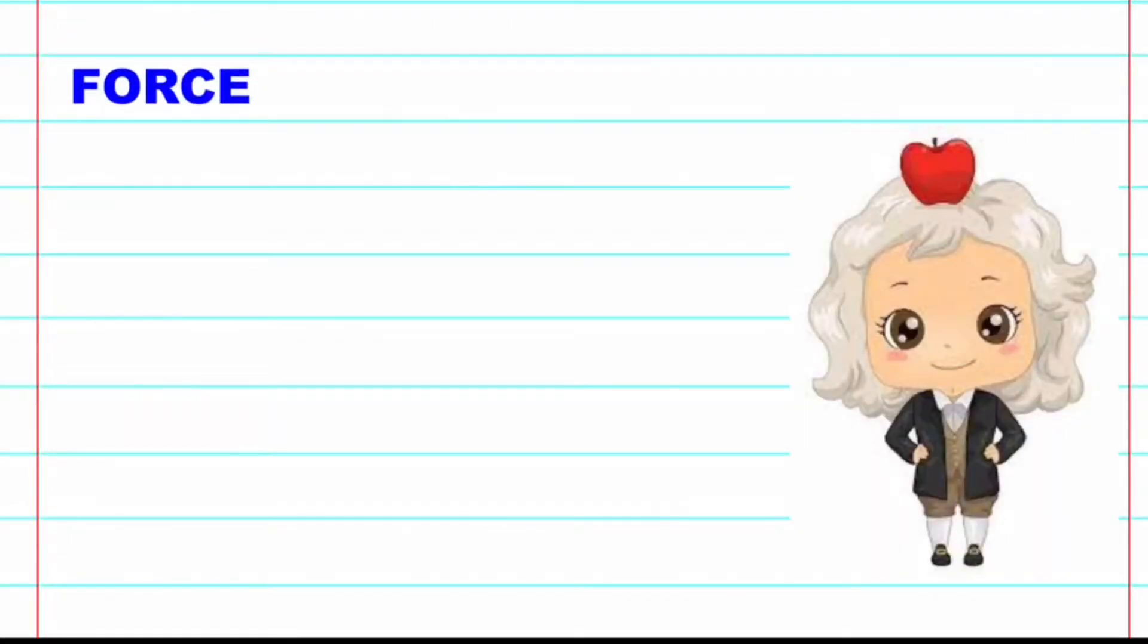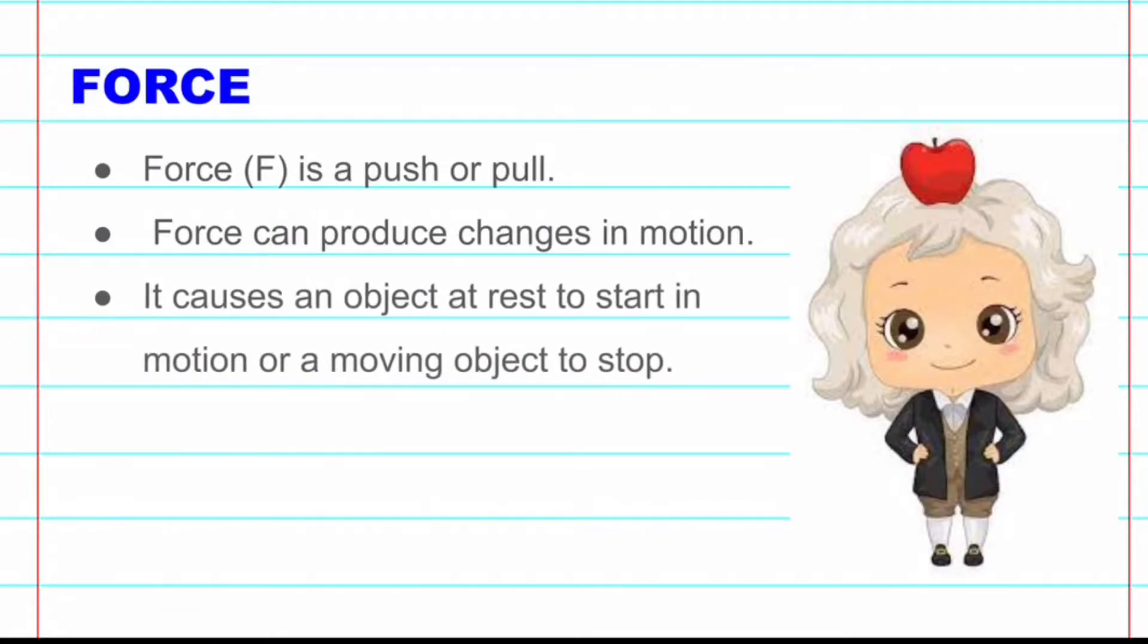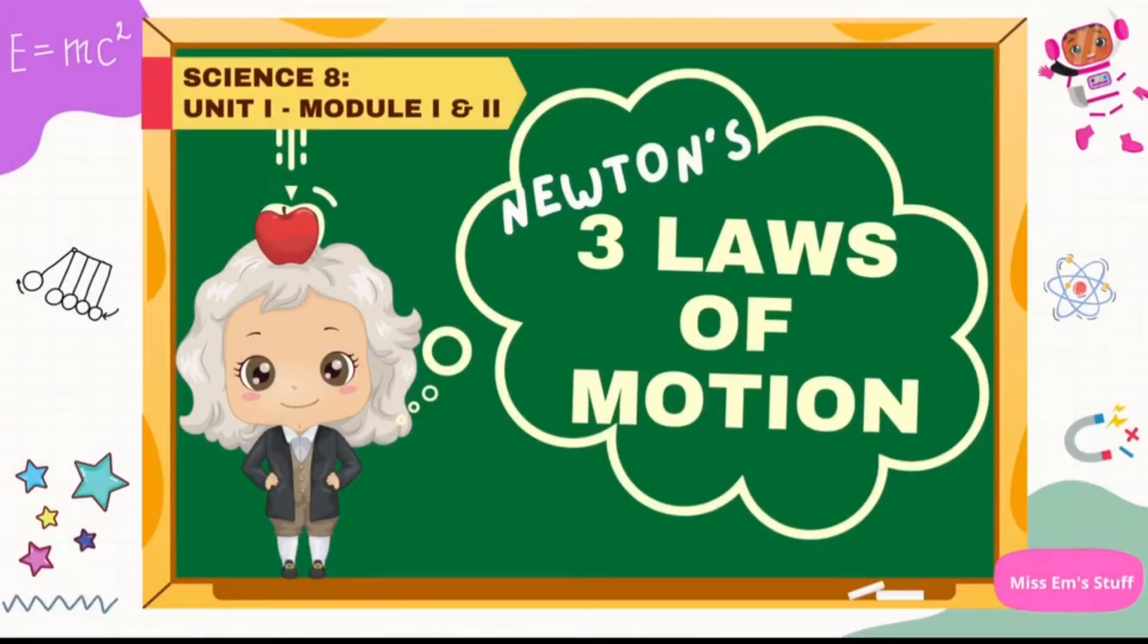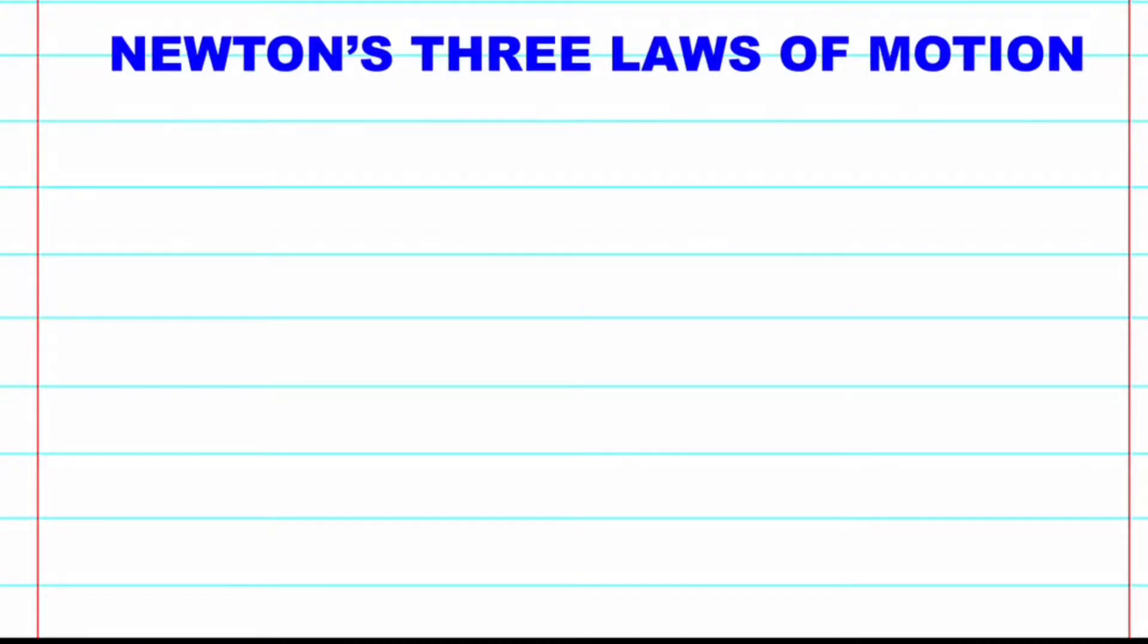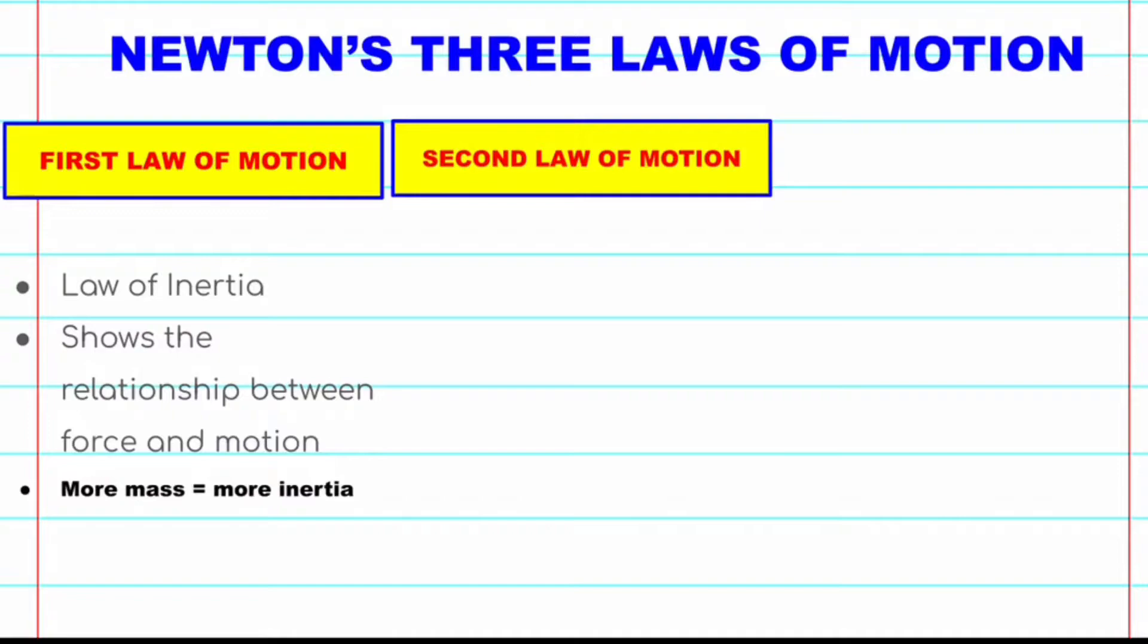Remember, force is a push or a pull. It can produce changes in motion. It causes an object at rest to start in motion or a moving object to stop. Last time, we had Newton's 3 laws of motion. We discussed the first law of motion, which is also called the law of inertia. It shows the relationship between force and motion, and that the more massive an object is, the more inertia it has.